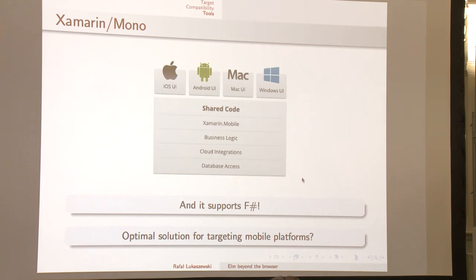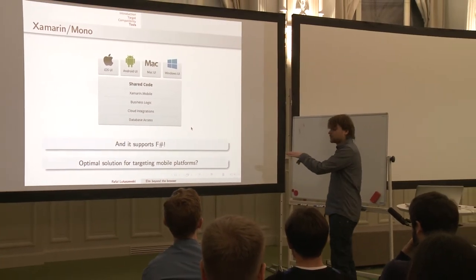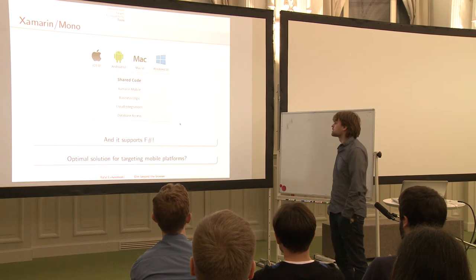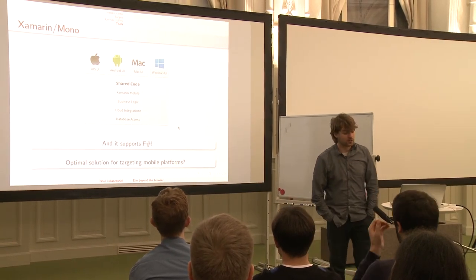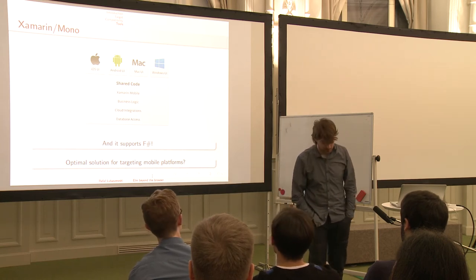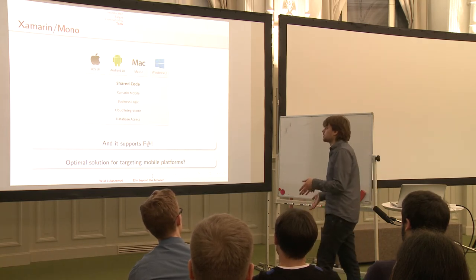Android has some XML, iOS has XML or some different language — different APIs for input and so on. Xamarin leaves the UI layer alone mainly, but you can still use the business logic and model logic and share it between platforms. For Elm it's actually both a good thing and a bad thing, because I don't know yet what we are going to do with the UI. It's the most important thing now.